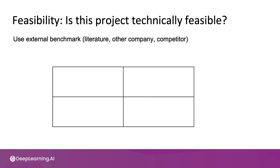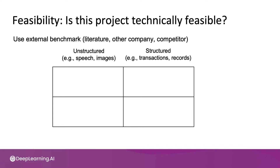I'm going to build a two-by-two matrix that looks at different cases depending on whether your problem has unstructured data like speech or images, or structured data like transaction records. On the other axis, I'm going to put new versus existing — by new I mean you're trying to build a system to do a task for the first time, such as if you've never done demand forecasting before. Existing refers to if you already have some existing system, maybe a machine learning one, that is carrying out this task and you're thinking of scoping out an improvement to it.